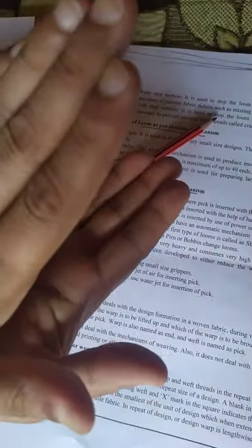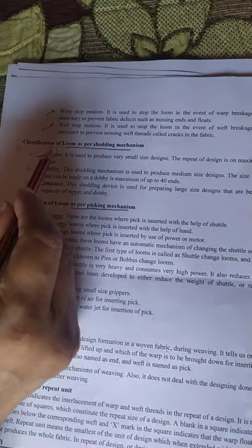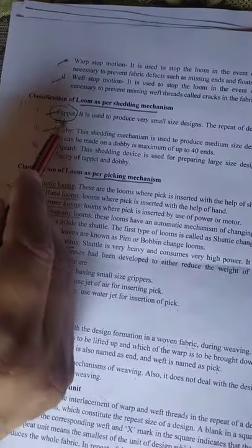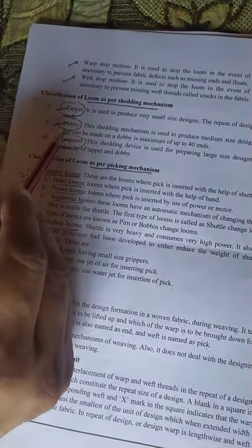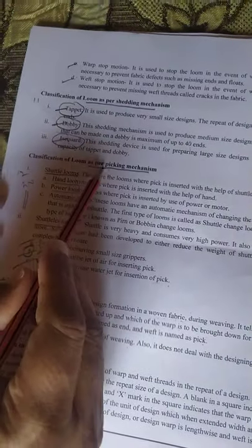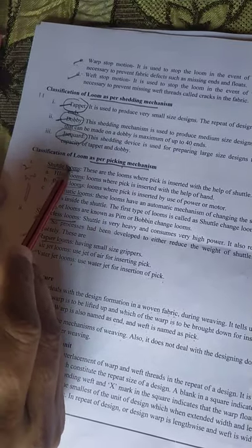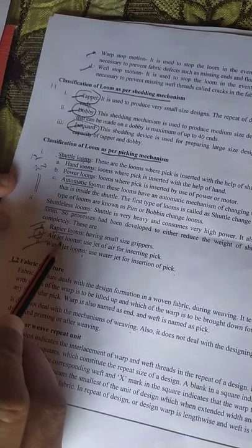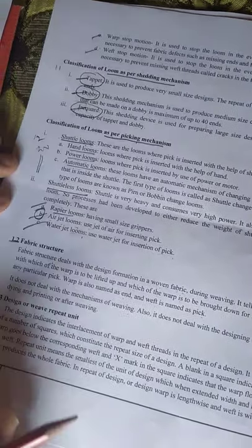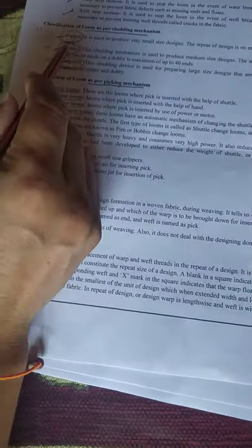What is the method of shedding? Shedding mechanism is three types: tappet, dobby, and jacquard. This will be taught in weaving technology. What is the method of picking? Shuttle, or now shuttleless - air jet, rapier, water jet.